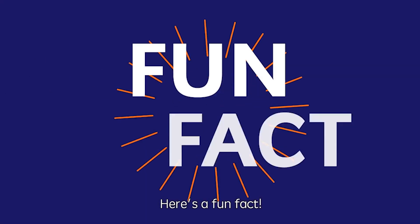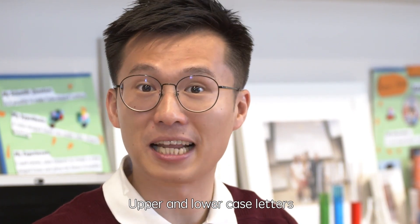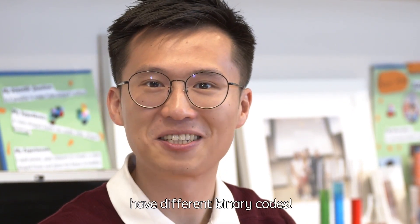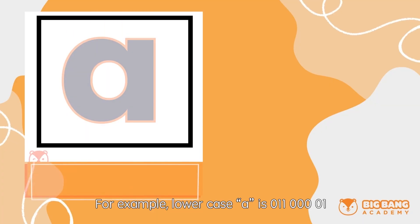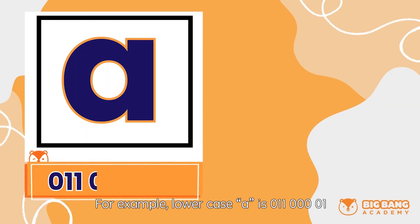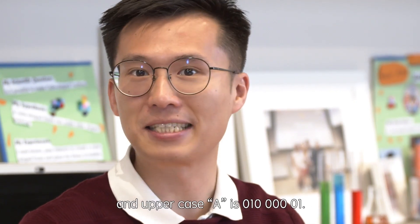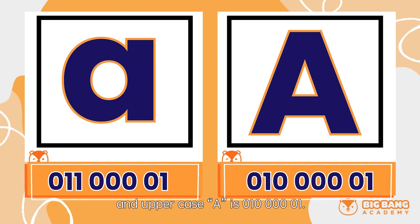Here's a fun fact: uppercase and lowercase letters have different binary codes. For example, lowercase a is 01100001, and uppercase A is 01000001.